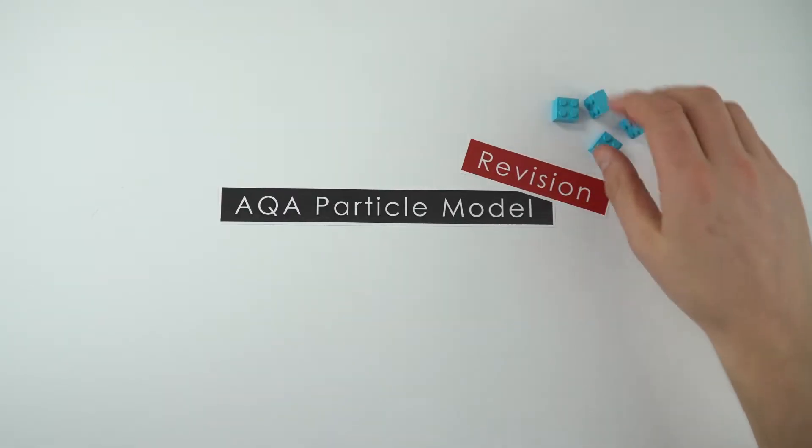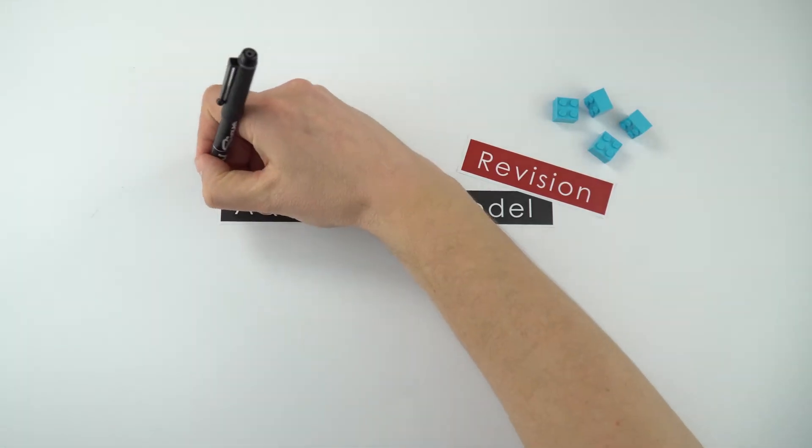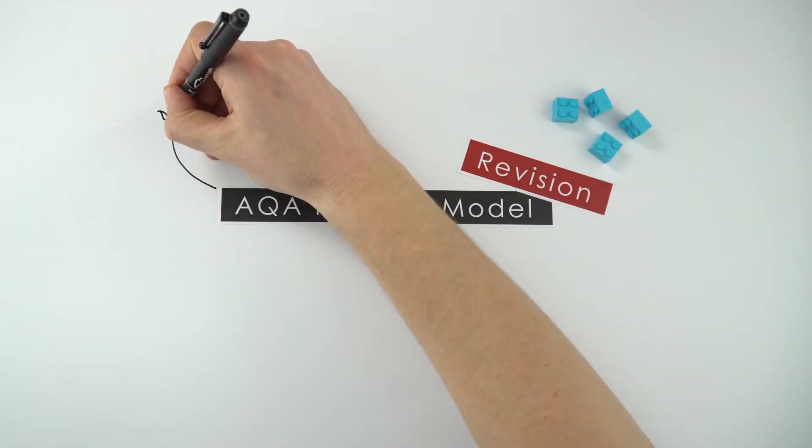This video is revision of the particle model, which is something that we use in physics to explain the world around us. The first thing we're going to consider is something called density.